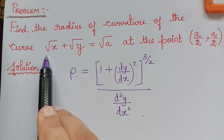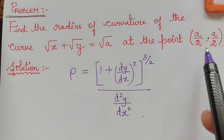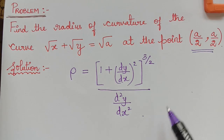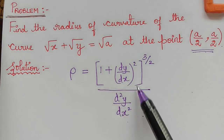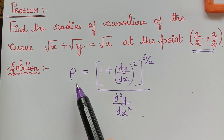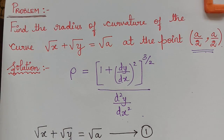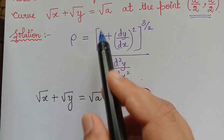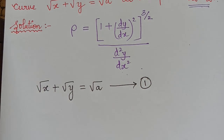With this given equation, we have to find dy/dx at the point (a/2, a/2), then d²y/dx² at the same point, and then substitute into this formula to get the radius of curvature. So let us do that. As the first step, let us write the given equation: √x + √y = √a, and mark it as equation 1.